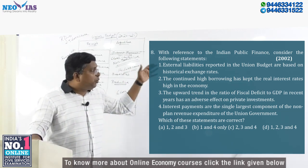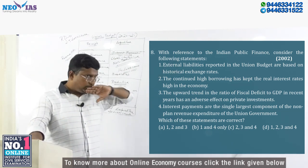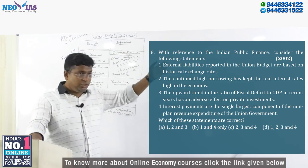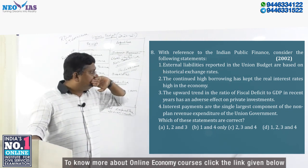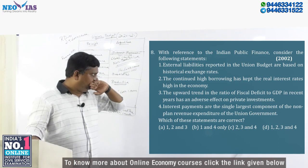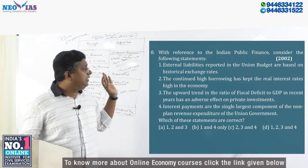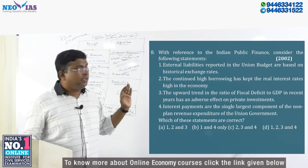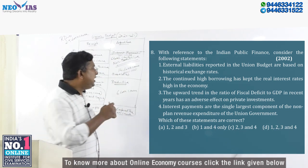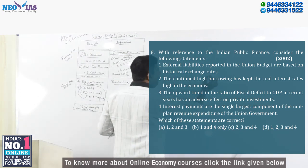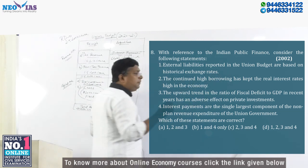External liability reported in the union budget — which year was this question asked? 2002. It's an old question. Reported in the union budget. External liability reported in the union budget are based on historical exchange rates.